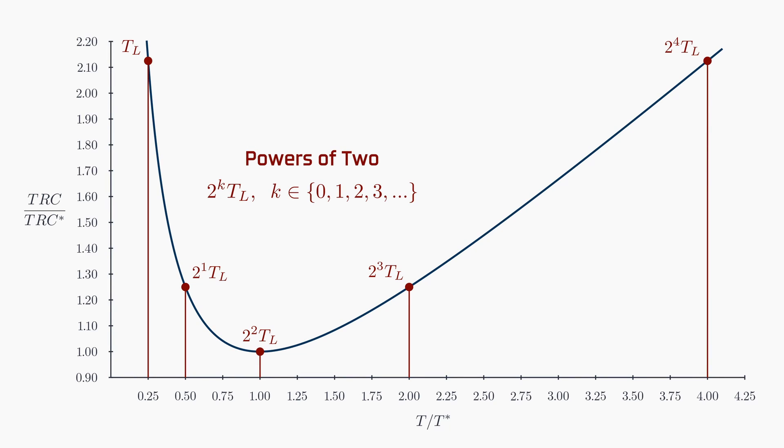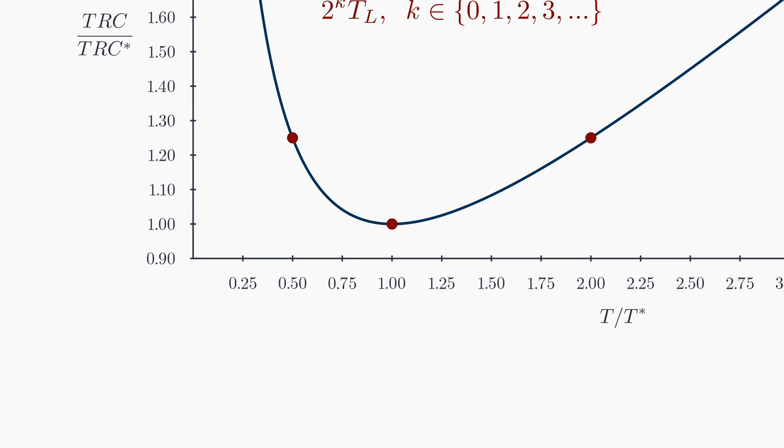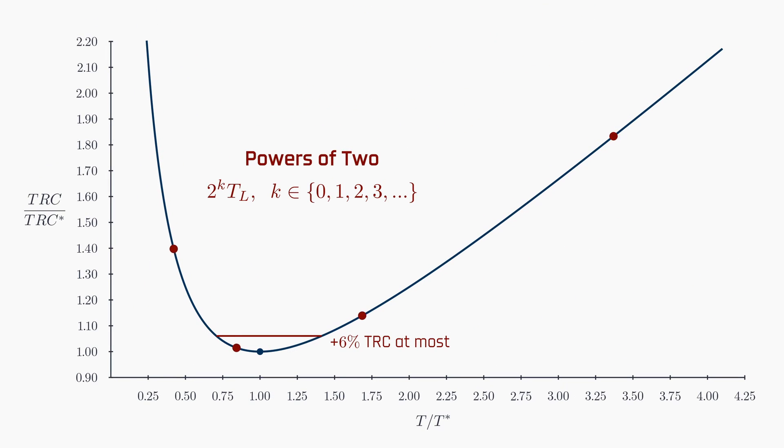The key advantage here is this. If TL is less than the theoretical T-star, then it's guaranteed that there's a powers of 2 policy available that will be at most 6% more costly than the optimal solution. Notice that there is always a point at or beneath this threshold. We will prove this algebraically.